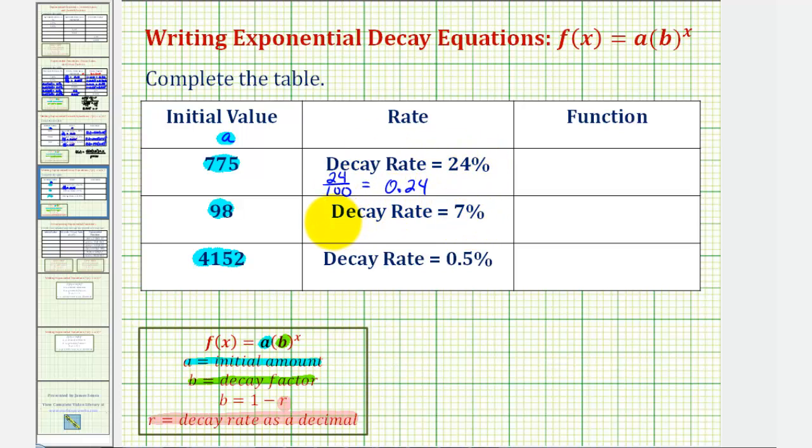For seven percent, we'd have seven divided by 100, which would give us 0.07 as a decimal. And 0.5 percent would give us 0.5 divided by 100. To move the decimal point to the left two places, notice how we'd have 0.005 as our decimal for 0.5 percent.